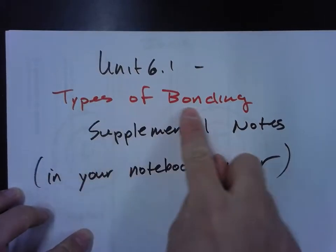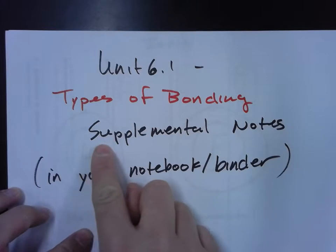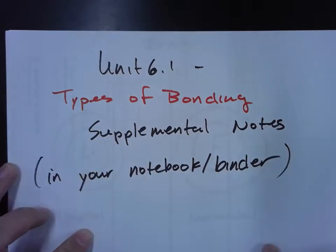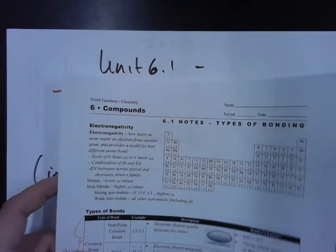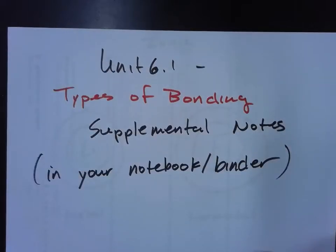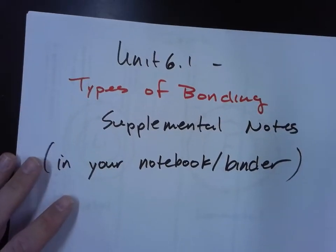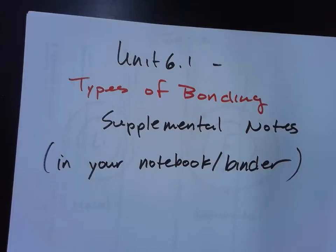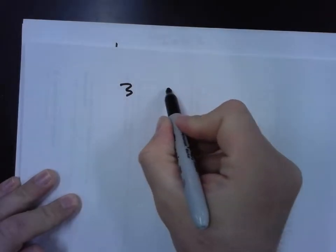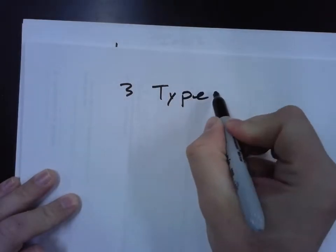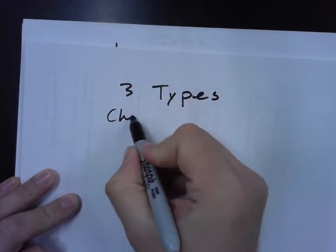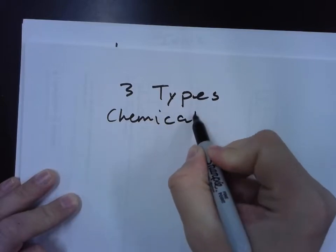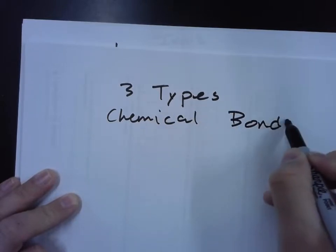Go ahead and write this: unit 6.1 types of bonding supplemental notes, so that you don't forget that it enhances these notes here. So basically there's three types of bonding. Three types of chemical bonds.